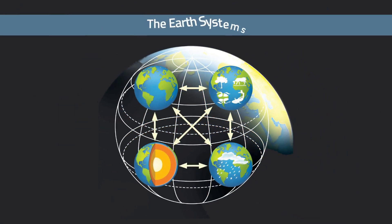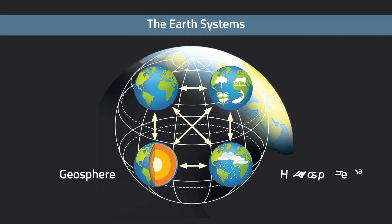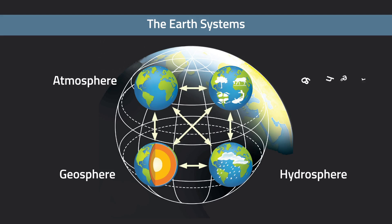Traditionally, there are three spheres: the geosphere, hydrosphere, and atmosphere. With the coming of an additional sphere, the biosphere, these spheres of the Earth's environment interact with each other and influence the way they work through time.